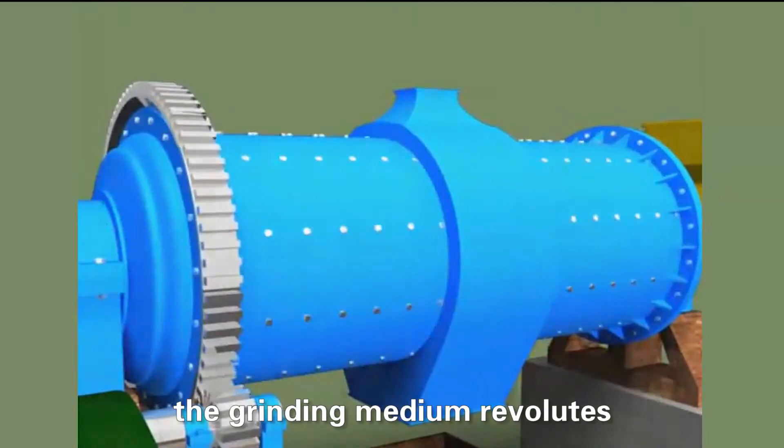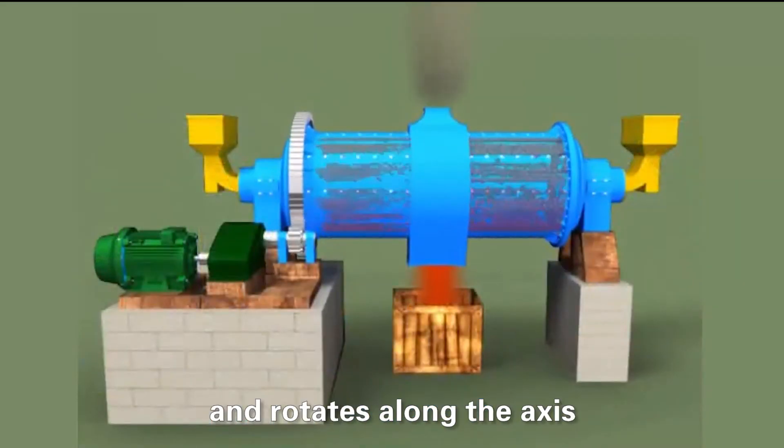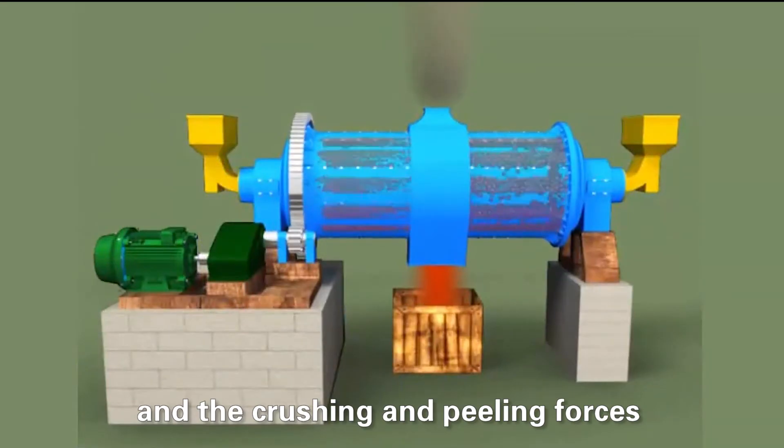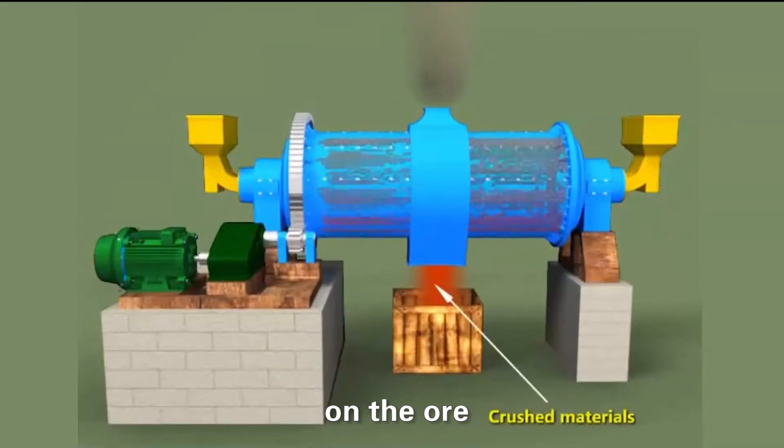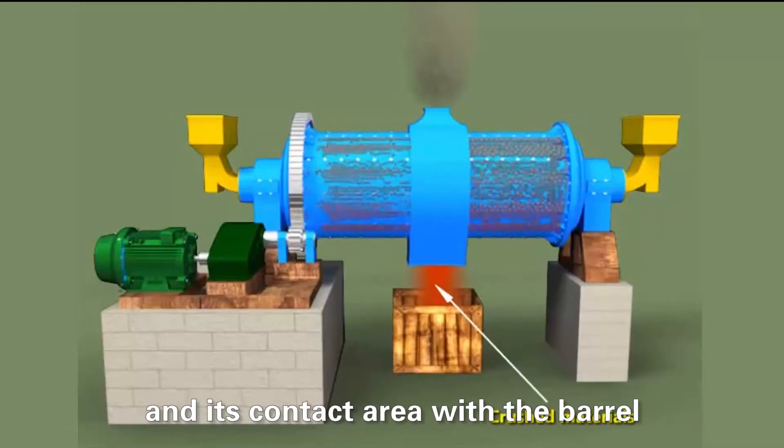On the other hand, the grinding medium revolves and rotates along the axis, and the crushing and peeling forces on the ore will be generated between the grinding medium and its contact area with the barrel, thereby grinding the ore.